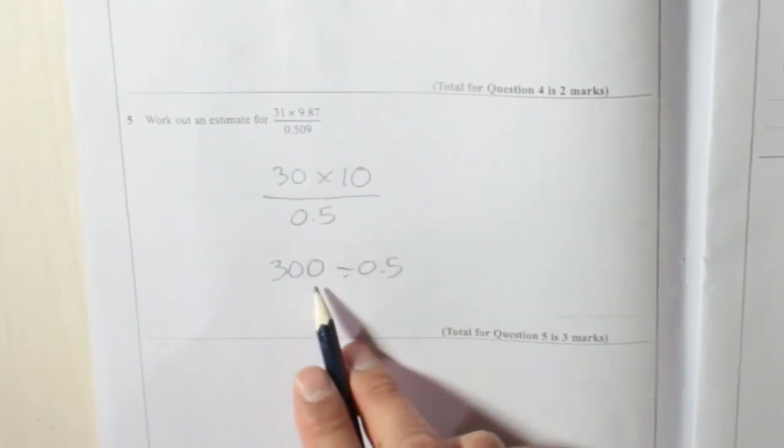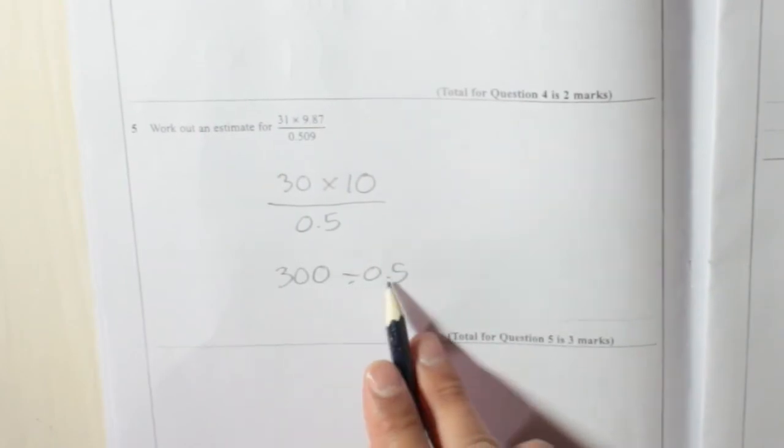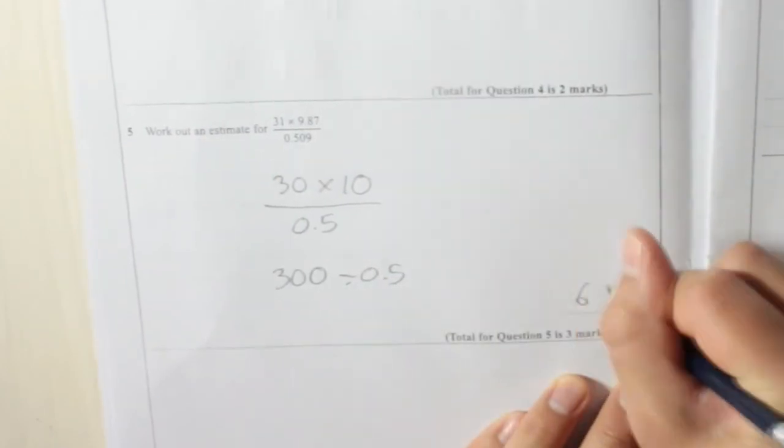So, 300 divided by 1 would be 300, 300 divided by 0.5 is 300 times 2, which is 600.